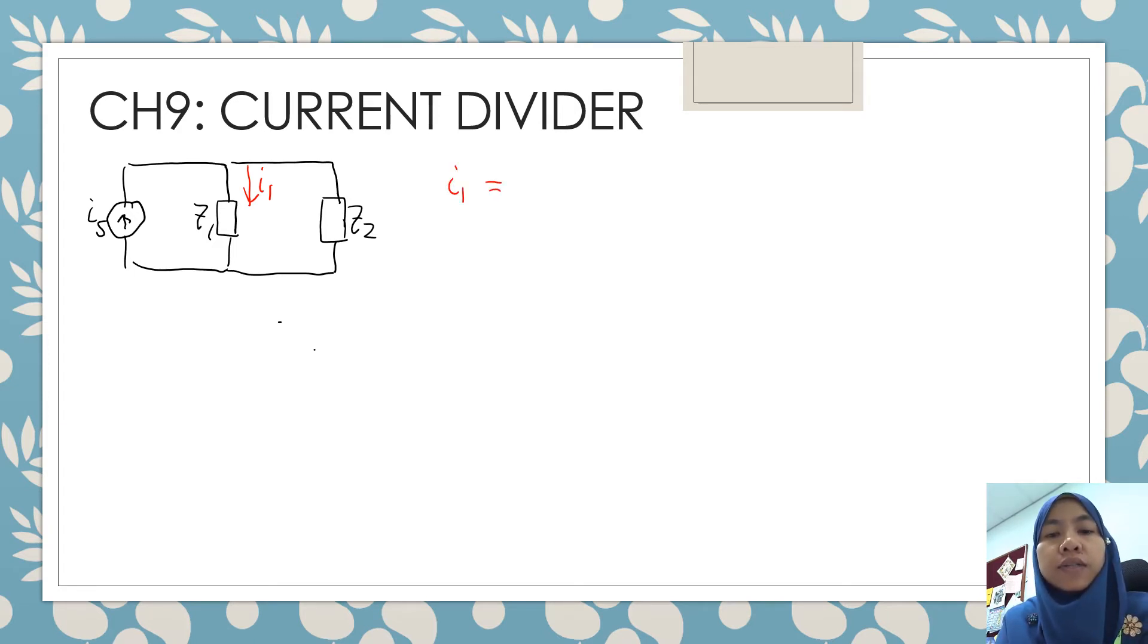So what is I1? You need the current source, which is Is, into the opposite impedance of that current flowing through impedance 1, so which is impedance 2, divided by summation of these two impedances in parallel.